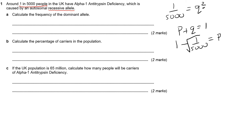Tap that into a calculator, and that gives us a value of 0.9858587, et cetera. And we're just going to round that off. The question doesn't tell us a particular number of decimal places, so I'm just going to pick three, which gives a nice easy number to work with: 0.9858, which rounds off to 0.986.